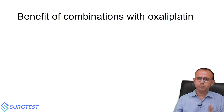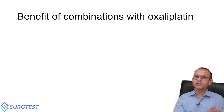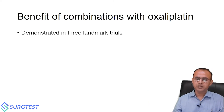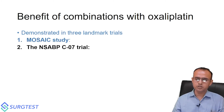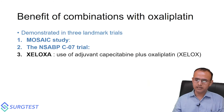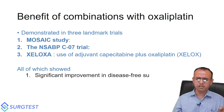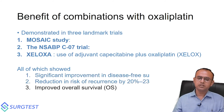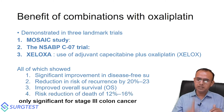Moving on to the benefit of oxaliplatin combination: the regimen we follow is 5-fluorouracil and oxaliplatin combination. There are multiple combinations — FOLFOX, FLOX, FLOFIRI, and many others. Landmark trials include the MOSAIC trial and NSABP C-07 trial. These trials have shown that adding oxaliplatin significantly improves disease-free survival, reduces recurrence, and improves overall survival with a 12 to 16 percent reduction in death.